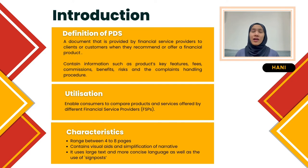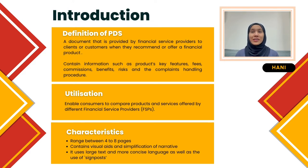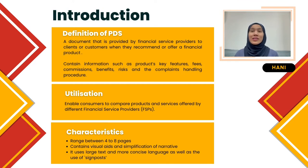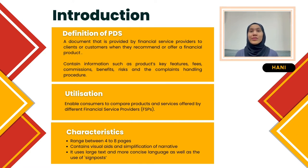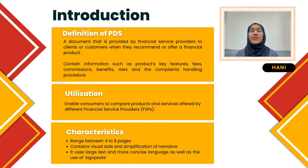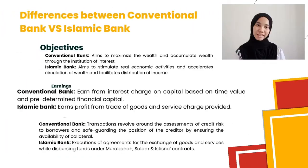The length of a Product Disclosure Sheet usually ranges between 4 to 8 pages. Some PDS contains visual aids and simplification of narrative. It uses large tags and more concise language, as well as signposts such as symbols, diagrams, and prominent titles and subheadings. This enhances the readability of the PDS and helps consumers navigate and locate key information in the document.